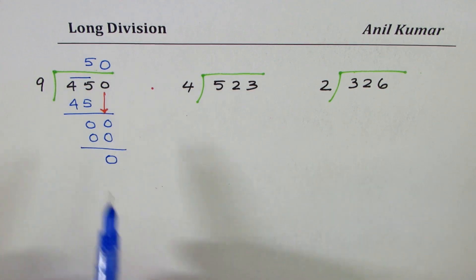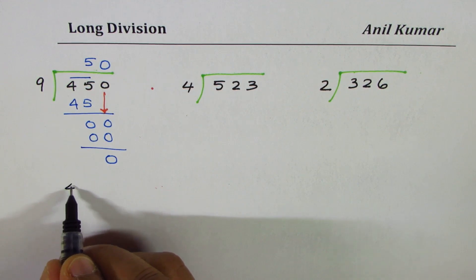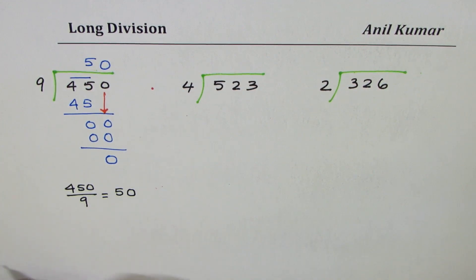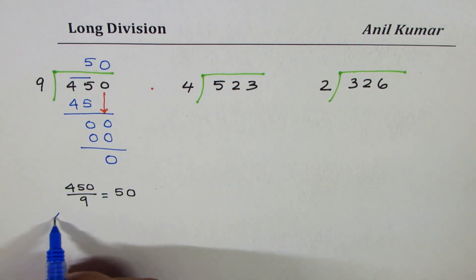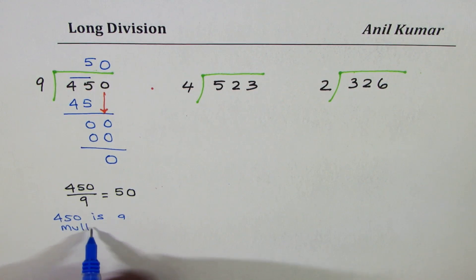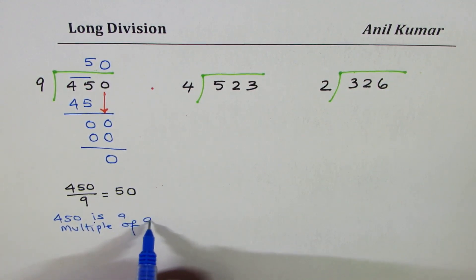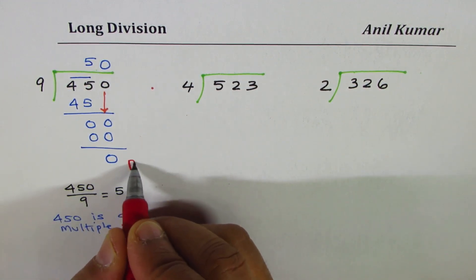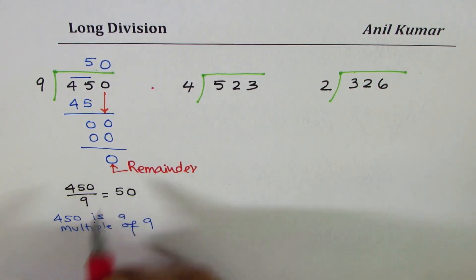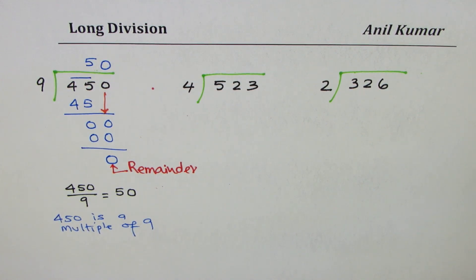Here, 450 is a multiple of 9. So we get 450 divided by 9 is equal to the answer 50. Since the remainder is 0, you note that 450 is a multiple of 9. If it is a multiple, remainder is 0. What we see here is that this remainder is 0. Now let's take up the next example.